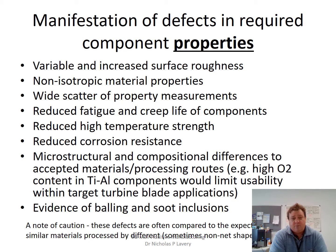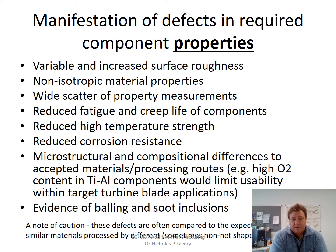Other properties affected include high temperature strength and corrosion resistance. Many of these are driven by microstructural and compositional differences from what you might expect. Coming through from powder, you might have higher levels of oxygen already in the powder, and by the time those higher levels of oxygen are encapsulated into the final build, you might end up with oxygen levels too high to meet the accepted application. These defects are nothing you would not consider in almost all manufacturing processes.